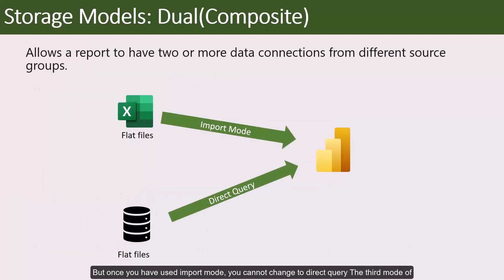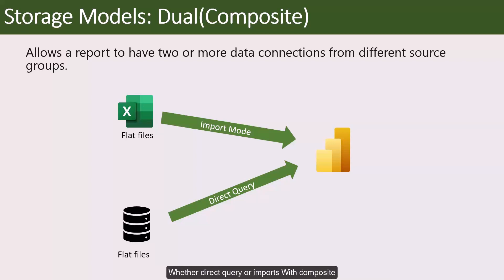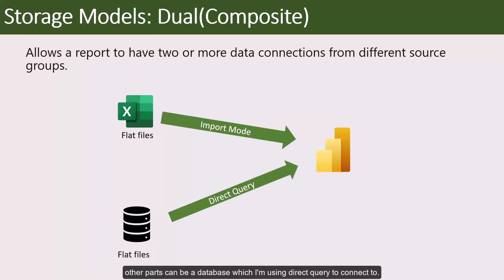The third mode of storage is the Dual or Composite mode. Previously in Power BI Desktop, when using Direct Query in a report, you could not create other types of data connections. With the Composite model, that restriction is removed. A report can seamlessly include data connections from more than one Direct Query or Import connection, meaning some parts of your semantic model can be a flat file while other parts are a database connected via Direct Query.